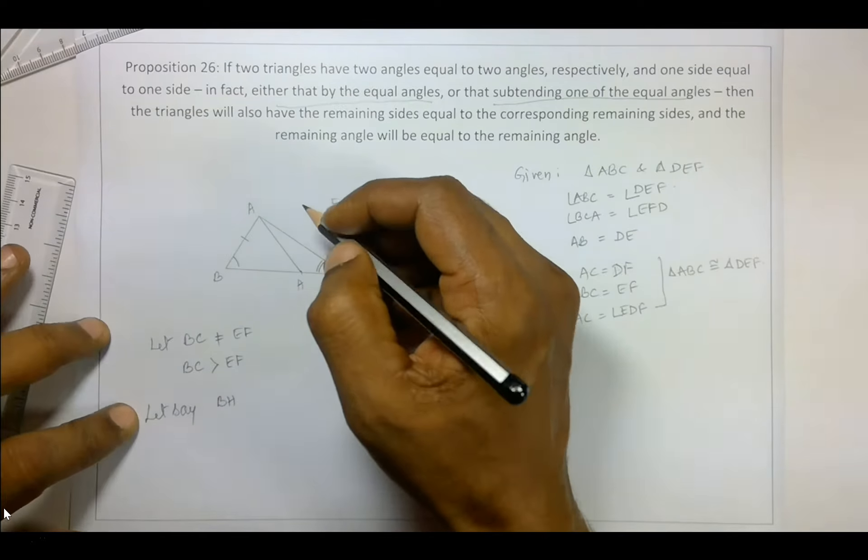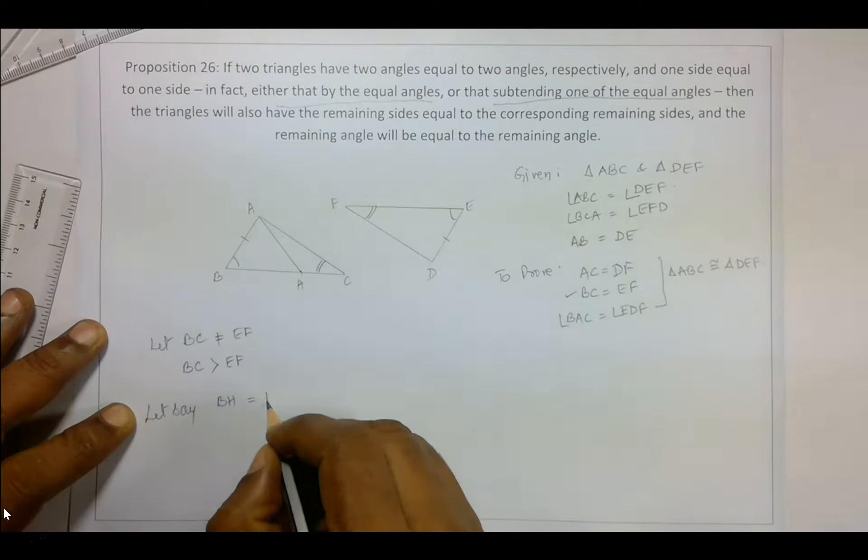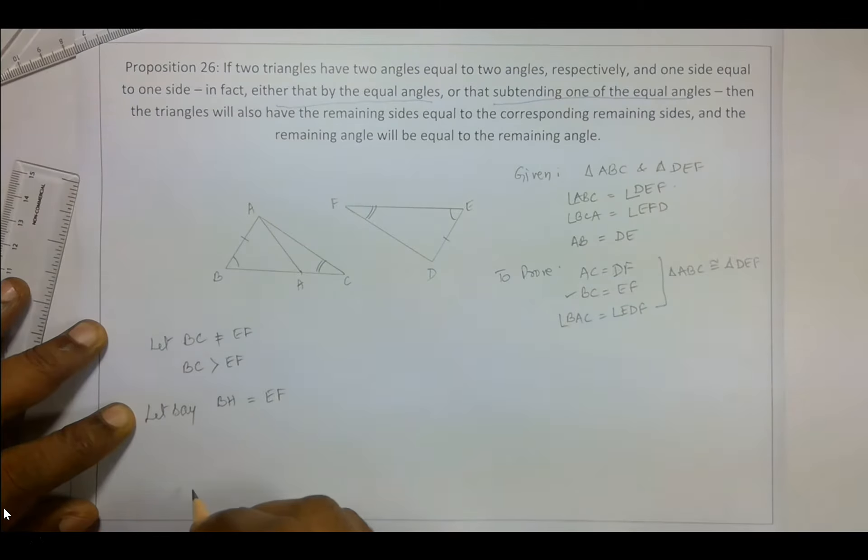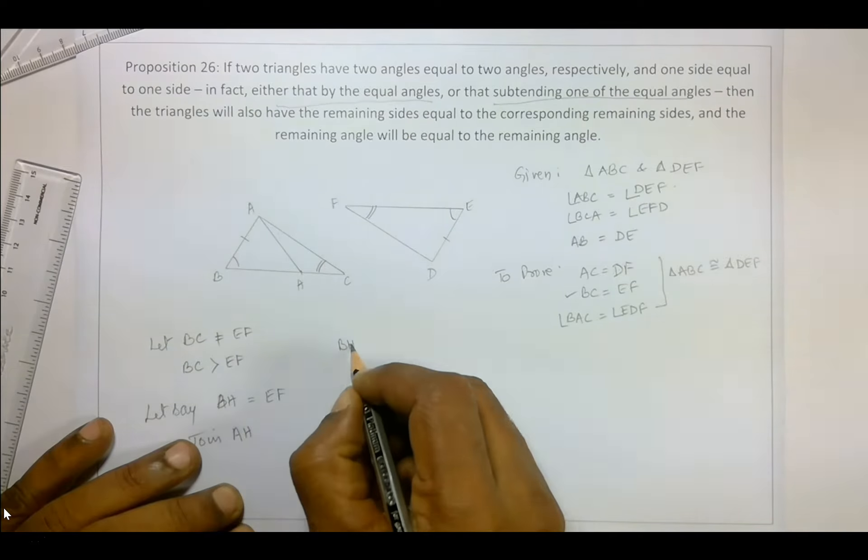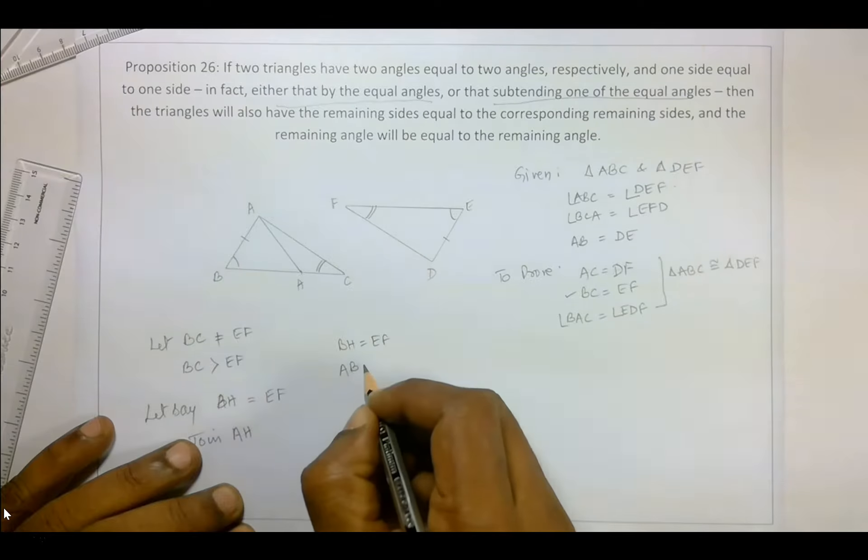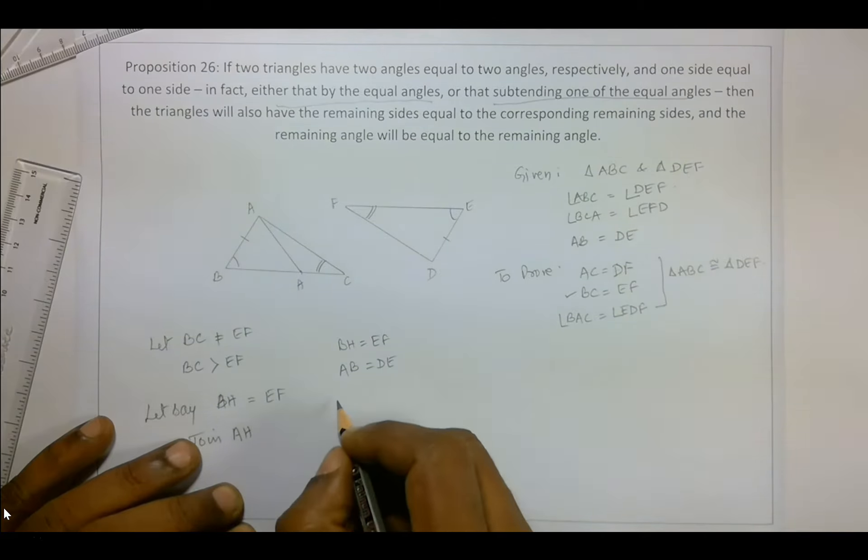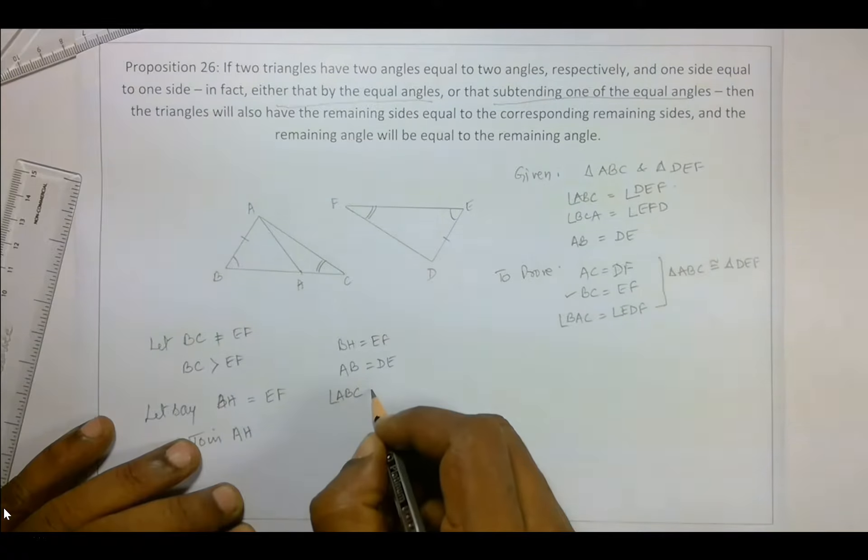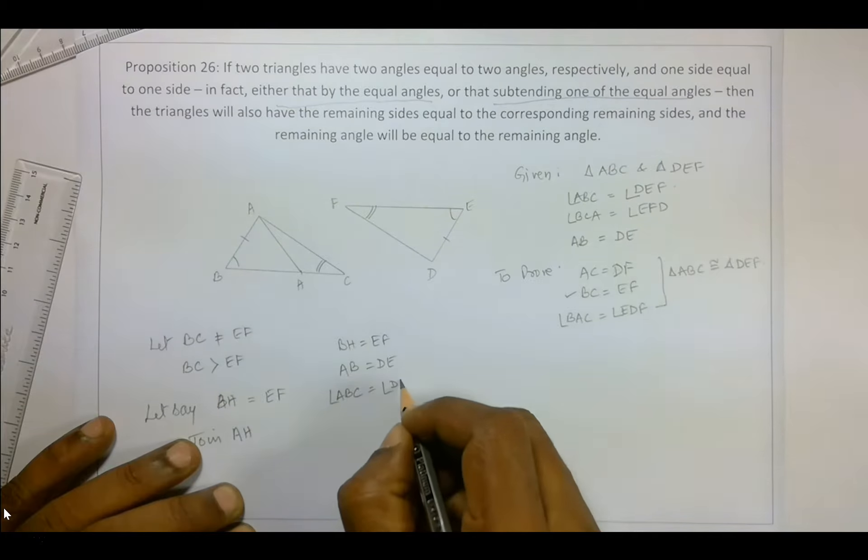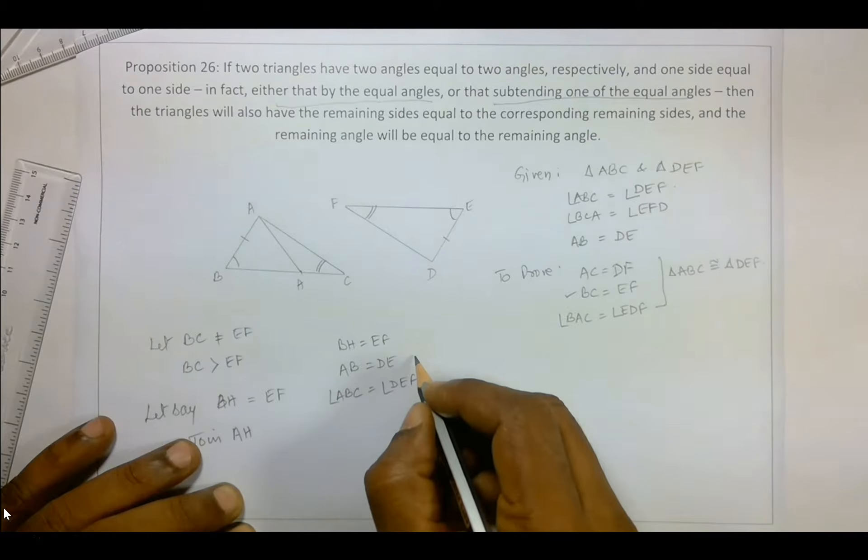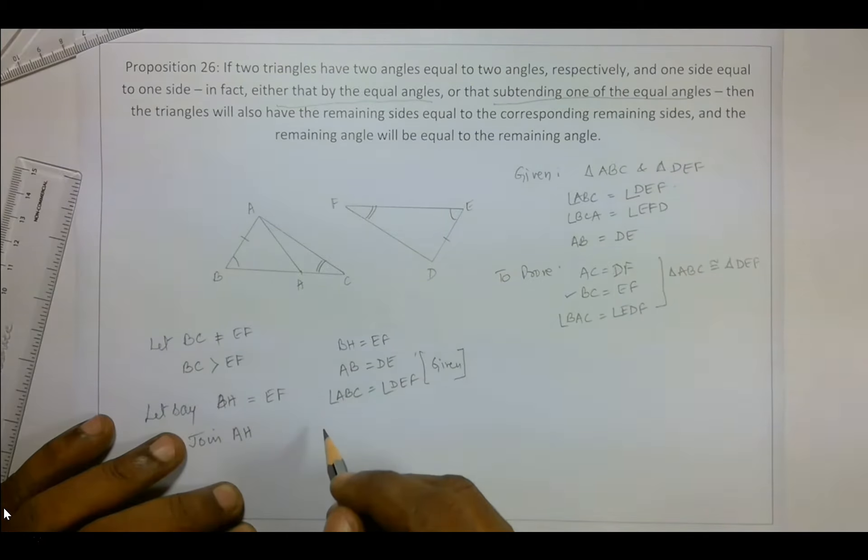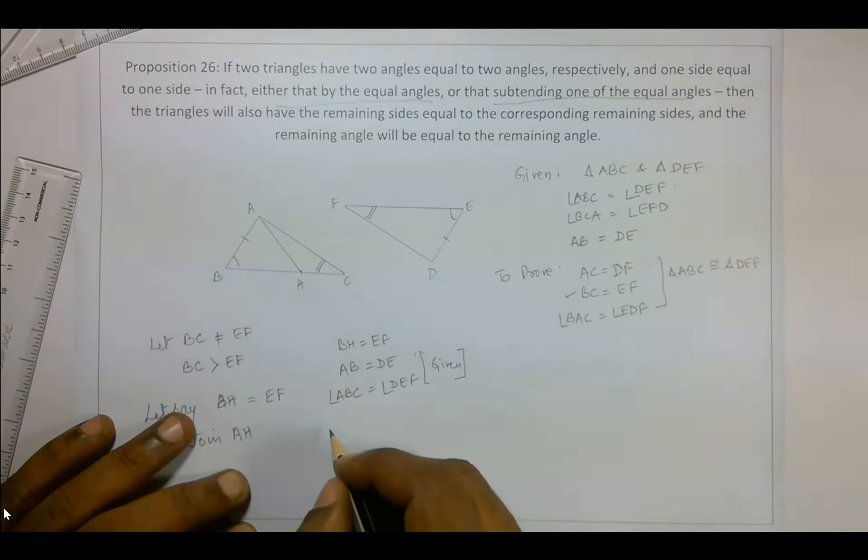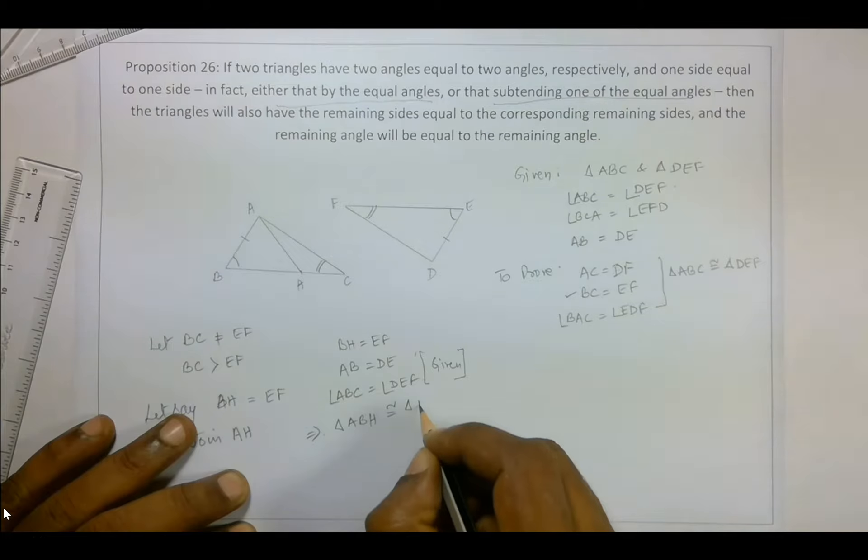And we join this. So now here BH is equal to EF. And join A and H. We know BH is equal to EF. We are given that AB is equal to DE. And angle ABC is equal to angle DEF. This is given. Now this implies that triangle ABH is congruent to triangle DEF by SAS.